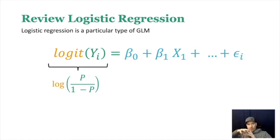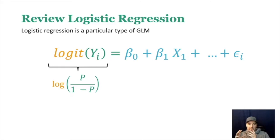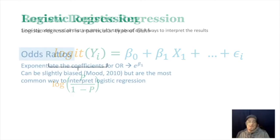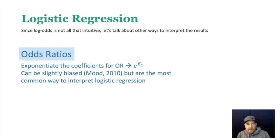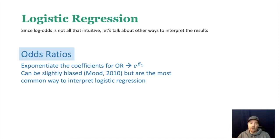Once it wraps up the outcome in that link, everything else is just like regular regression, other than our outcome is assumed to have a binomial distribution. The log odds can be confusing, so we'll talk about what that means. The way we actually interpret it is using odds ratios — by exponentiating the coefficient, turning the log odds into an odds ratio.